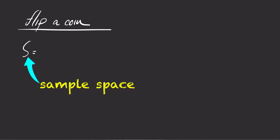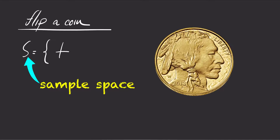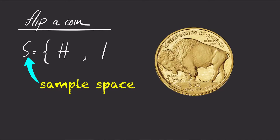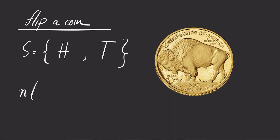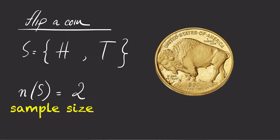When you flip a coin, the sample space listing all possible outcomes are either a head or a tail. So the number of all possible outcomes for the sample space is 2.